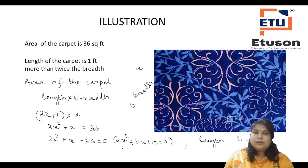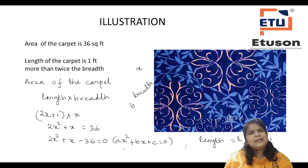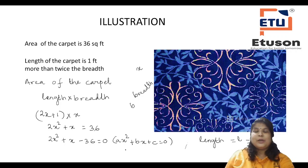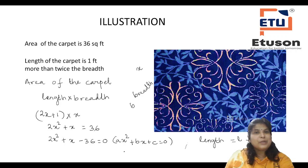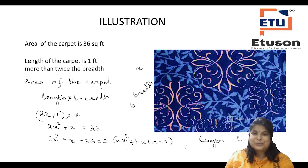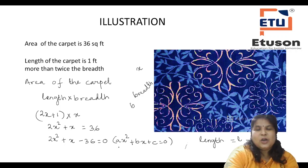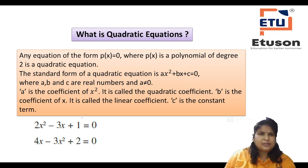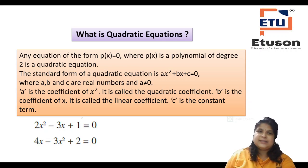After obtaining this expression, you can solve this equation by factorization method or any other method. Now you might have understood how to form an algebraic expression and convert it into an equation, then check whether it satisfies the condition for a quadratic equation. So always go for the real-life situation and correlate your mathematics. What is a quadratic equation? Any equation of the form P(X) = 0, where P(X) is a polynomial of degree 2, is a quadratic equation.